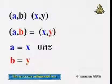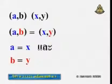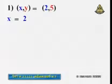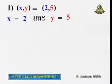For example, the condition is: ordered pair (a, b) equals ordered pair (x, y) means a is equal to x, and b is equal to y. So if the ordered pair (x, y) equals (2, 5), then x equals 2 and y equals 5.